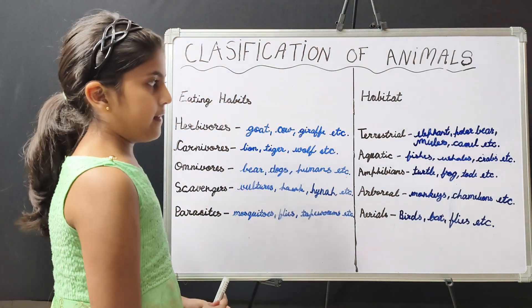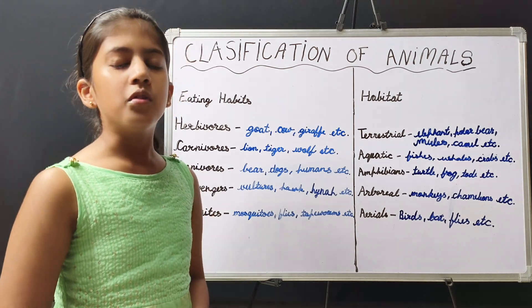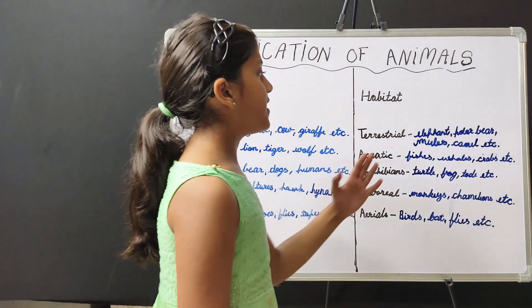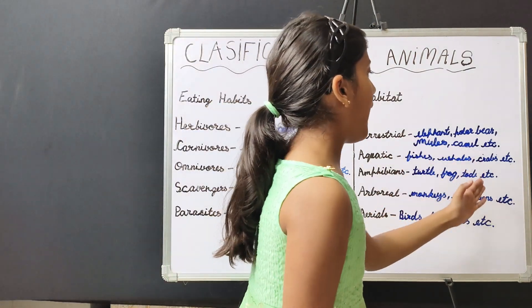Aquatic animals are those animals which live in water. For example, fishes, whales, crabs, etc.